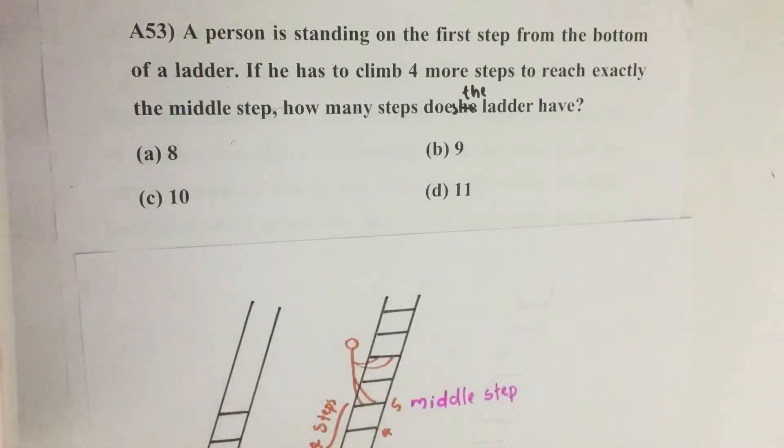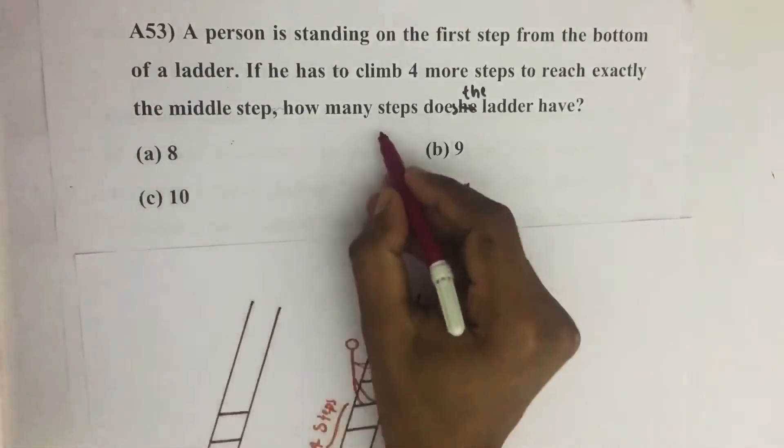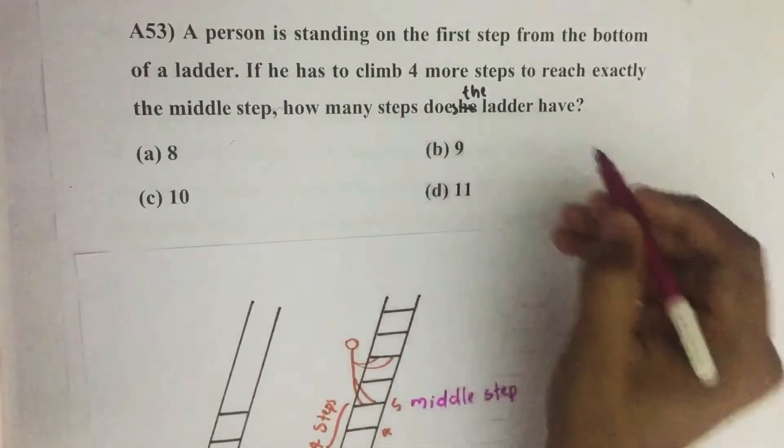A person is standing on the first step from the bottom of a ladder. If he has to climb four more steps to reach exactly the middle step, how many steps does the ladder have?